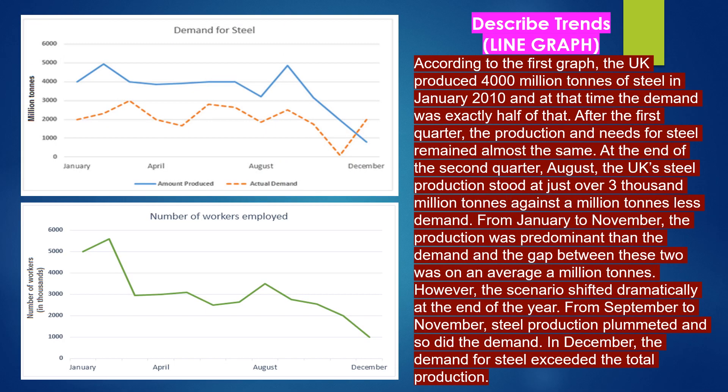According to the first graph, the UK produced 4,000 million tons of steel in January 2010, and at that time the demand was exactly half of that. After the first quarter, the production and needs for steel remained almost the same. At the end of the second quarter, August, the UK steel production stood at just over 3,000 million tons against a million tons less demand. From January to November, the production was predominant over the demand and the gap between these two was on average a million tons.